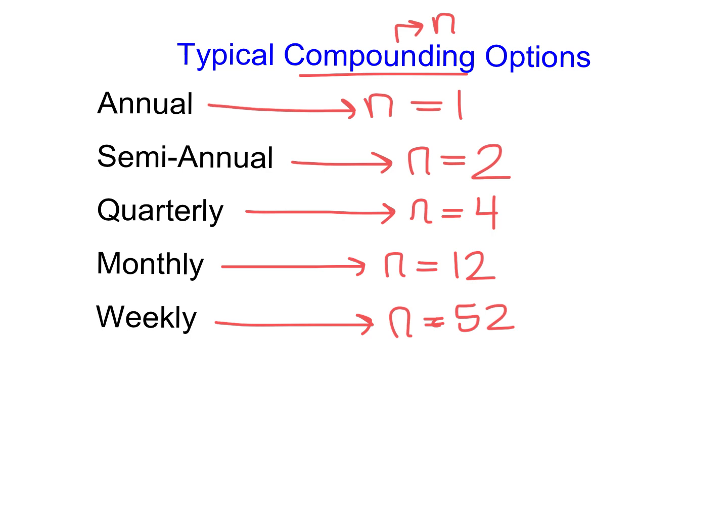There may be other instances that we have to think through about how many times it might be compounded in a year. For example, daily might be another one that pops up, and if it were to be daily, we would be able to think through that N would be equal to about 365. So you really have to think through how many times it's going to be compounded within that year frame and then think through what that N value is going to be in that instance.